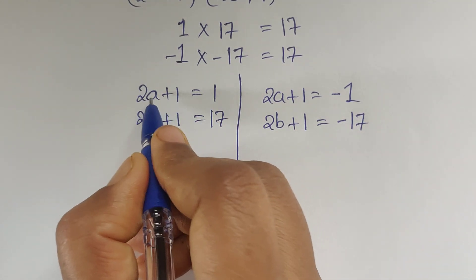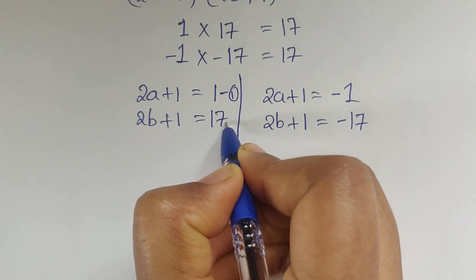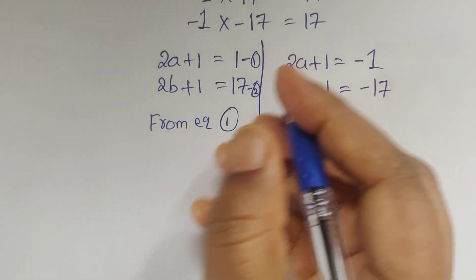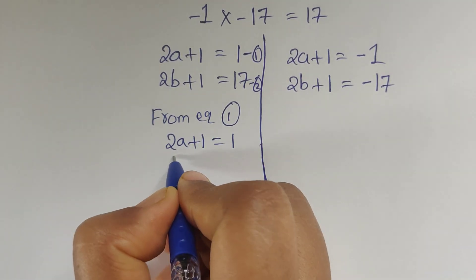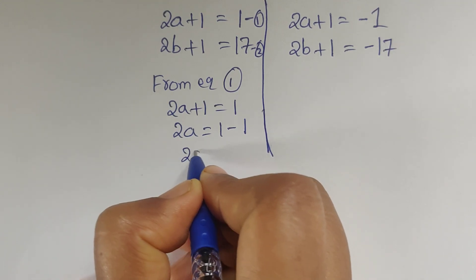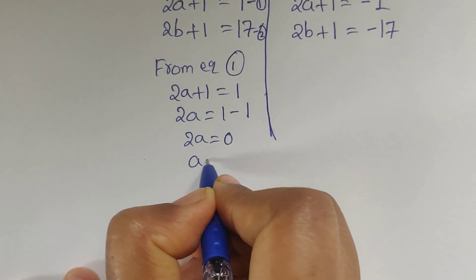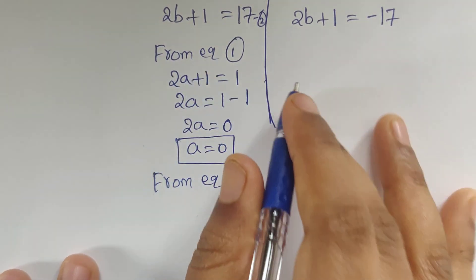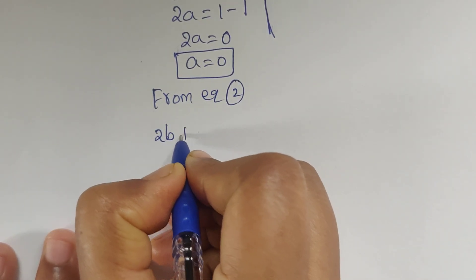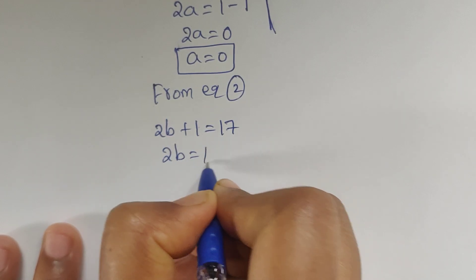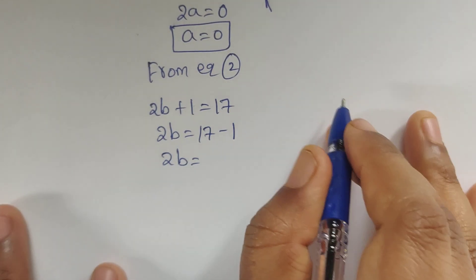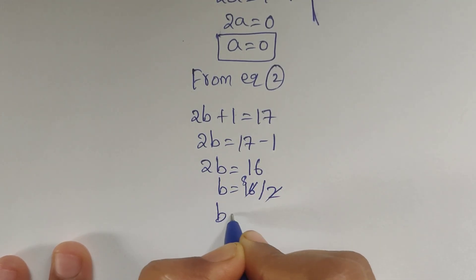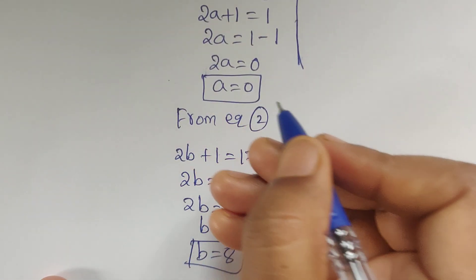From the first possibility, equation 1: 2a plus 1 equals 1, so 2a equals 1 minus 1 which equals 0, so a equals 0. From equation 2: 2b plus 1 equals 17, so 2b equals 17 minus 1 which equals 16, so b equals 16 divided by 2 which is 8. So we got a equals 0 and b equals 8.